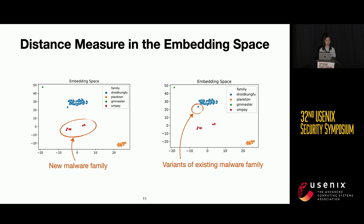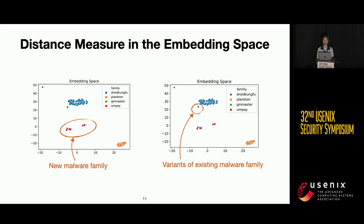A nice embedding space allows us to use distance measures to help with active learning and robustness against drift. Even though standard contrastive learning did not train on the malware family UMP, samples from this new family still form very distinct clusters that are far from known families. So if we design a good distance measure, we can pick out those samples, give them to human analysts for labeling, expand the training set, and do active learning. For known families, gradually drifted variants like a new variant of Joy Kung Fu stay close to the original cluster, making a classifier trained on the embedding space naturally more robust against such gradual drift.